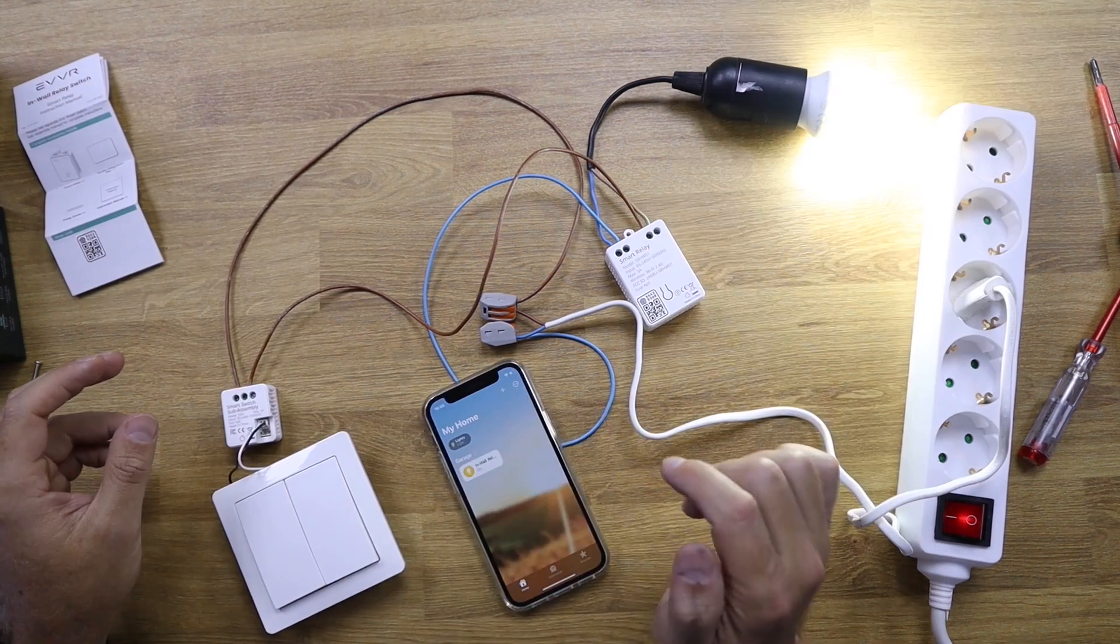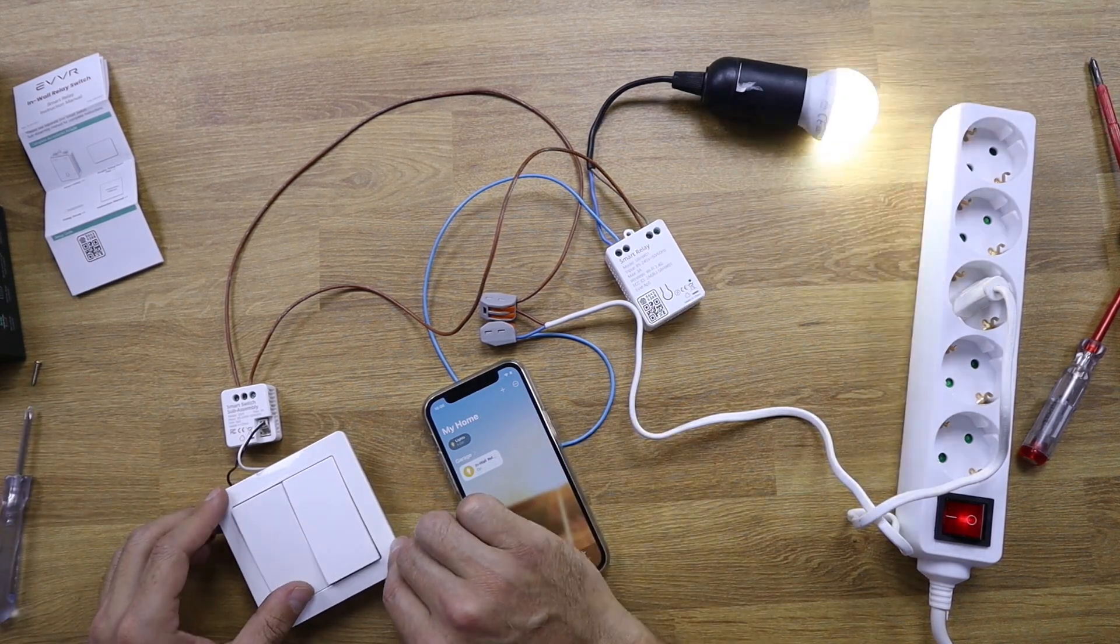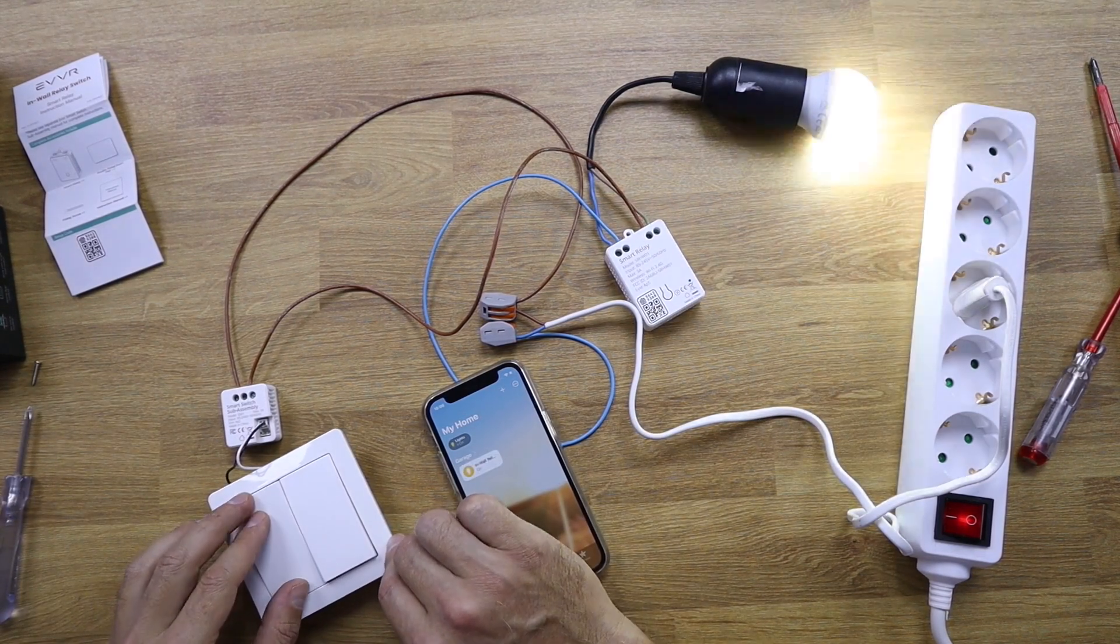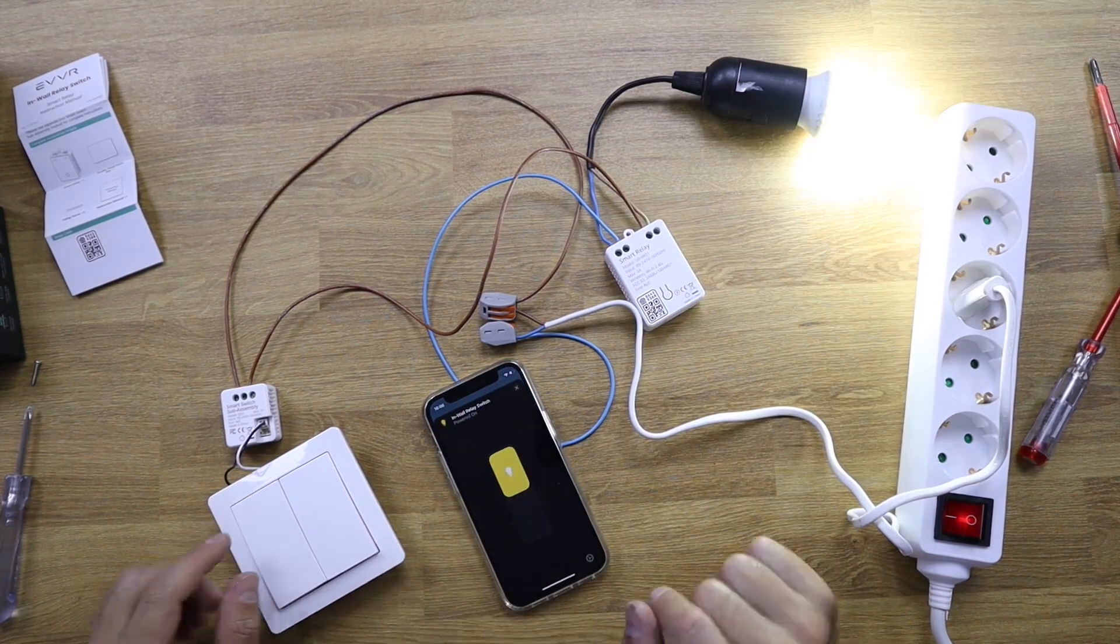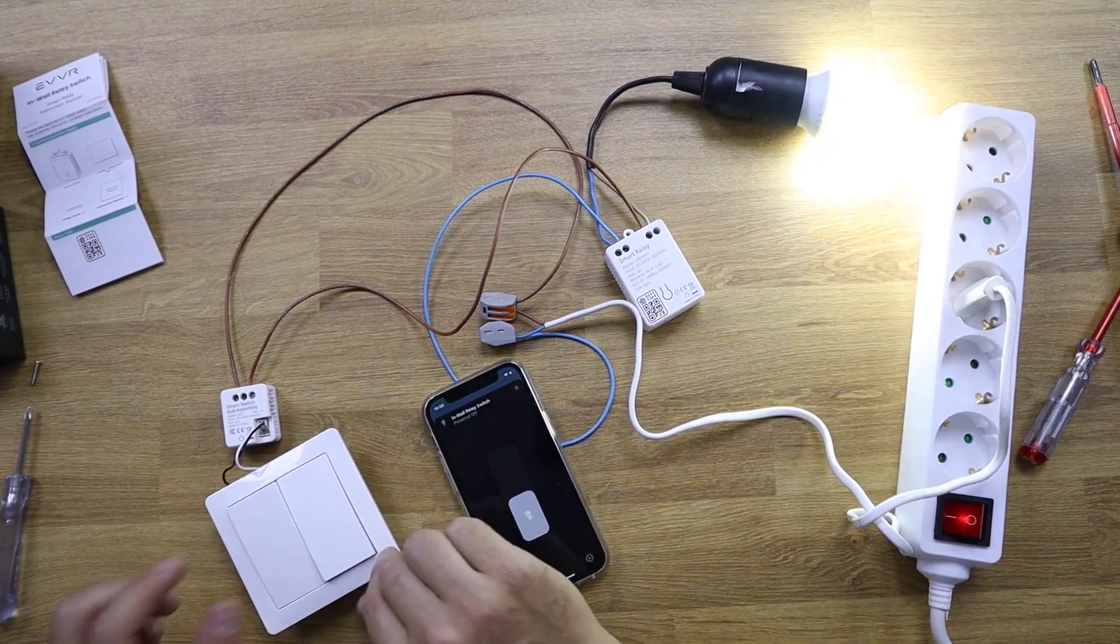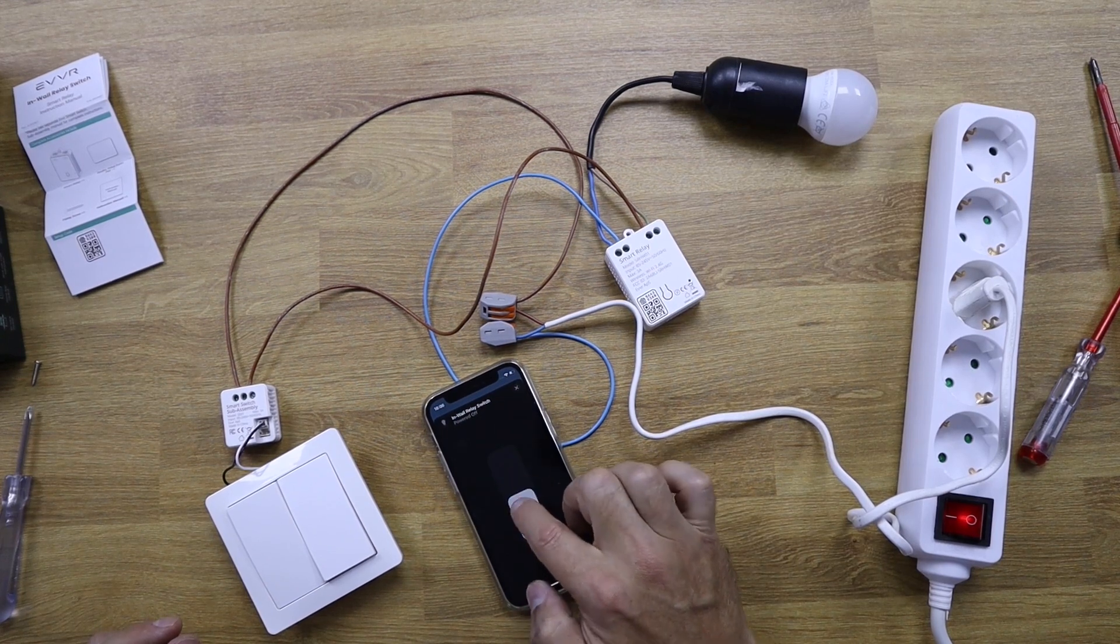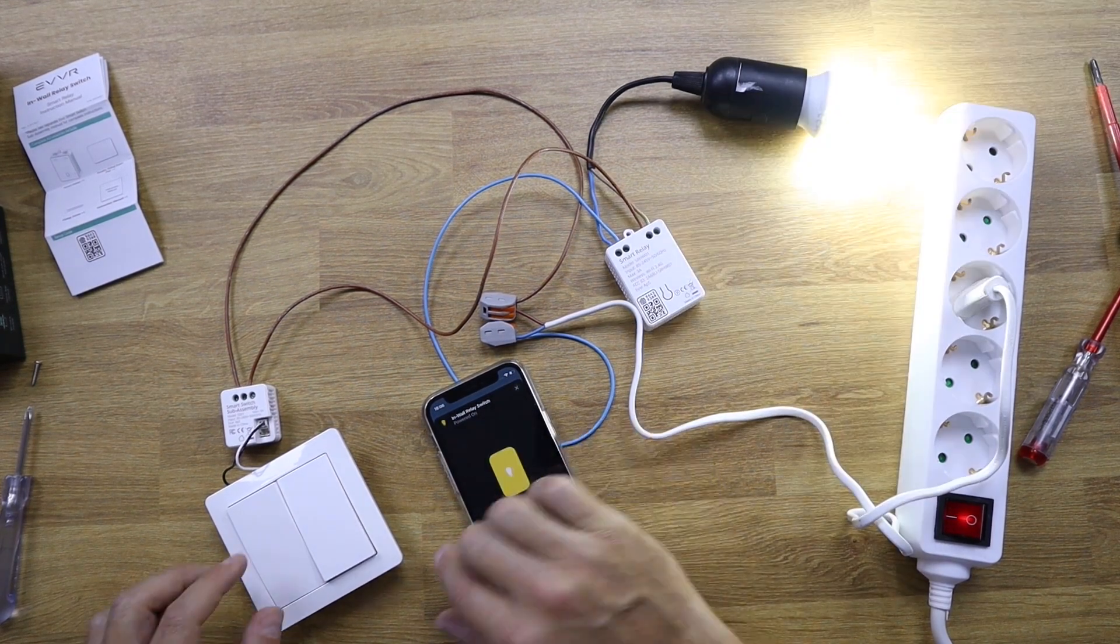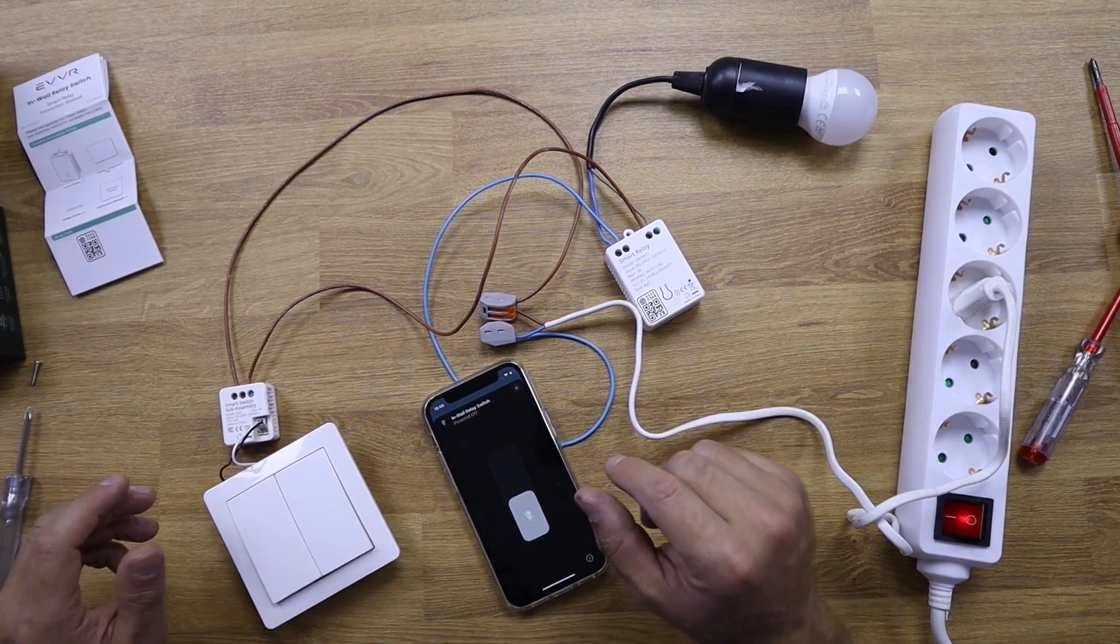And we have this working with the app. Of course, if we want to use the switch as well, we can do so. You can see we can open this, and if we open with the switch, there we go. Then we can close with the app, and then we can use the switch, app, app, and there we go with the app and also with the switch. So this is it - really easy to set up as we can see, and also easy to use.